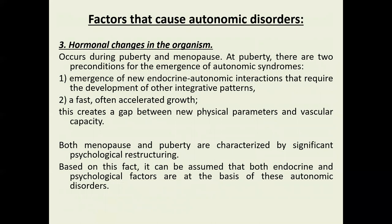Another group of factors is hormonal changes in the organism, usually occurring during puberty and menopause. At puberty, there are two preconditions for emergence of autonomic syndrome: the acute emergence of new endocrine-autonomic interactions requiring new integrative patterns, and an accelerated growth of the body which creates a gap between new physical parameters and vascular capacity. Both menopause and puberty are characterized by significant psychological restructuring, suggesting that both endocrine and psychological factors underlie these autonomic disorders.